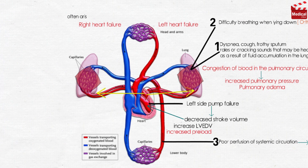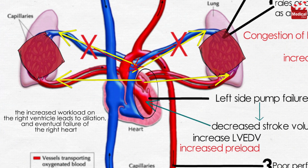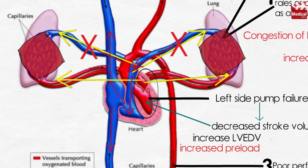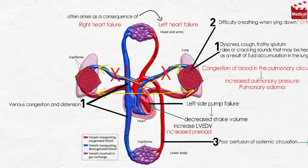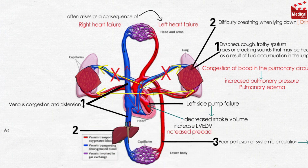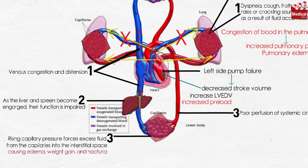Right heart failure often arises as a consequence of left heart failure. The increased pulmonary pressure that accompanies left heart failure significantly increases resistance to blood flow from the right ventricle to the lungs. Over time, the increased workload leads to dilation and eventual failure of the right heart. Right heart failure may also result from chronic obstructive pulmonary disease and cystic fibrosis. The increased right ventricular workload causes venous congestion; backed-up blood distends the visceral veins, especially the hepatic vein. As the liver and spleen become engorged, their function is impaired. Rising capillary pressure forces excess fluid into the interstitial space, causing edema, weight gain, and nocturia.